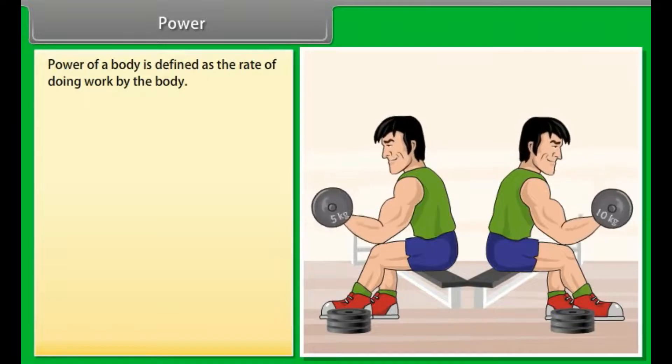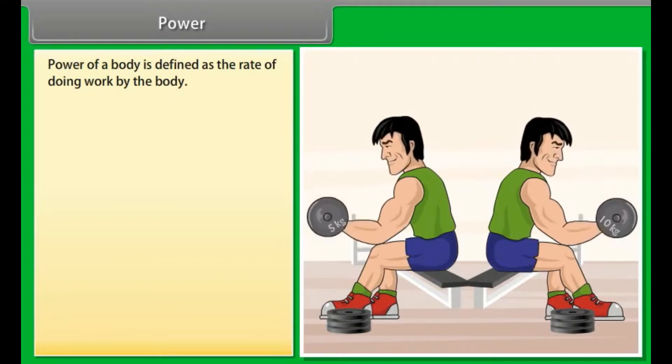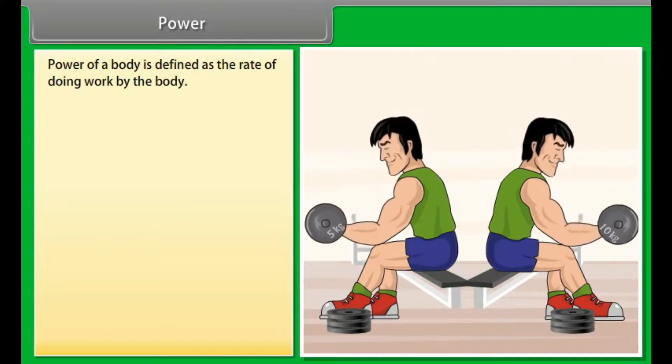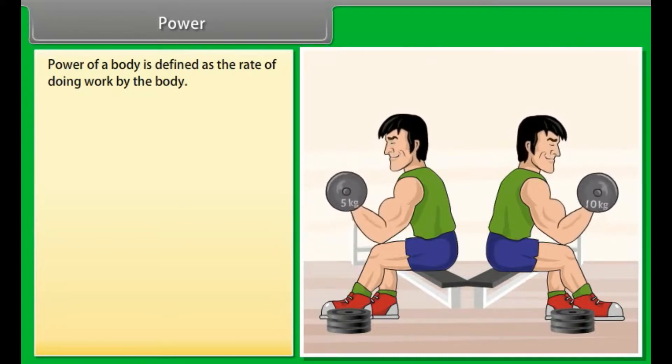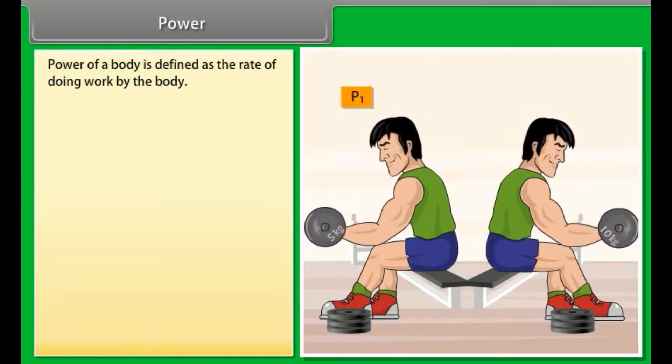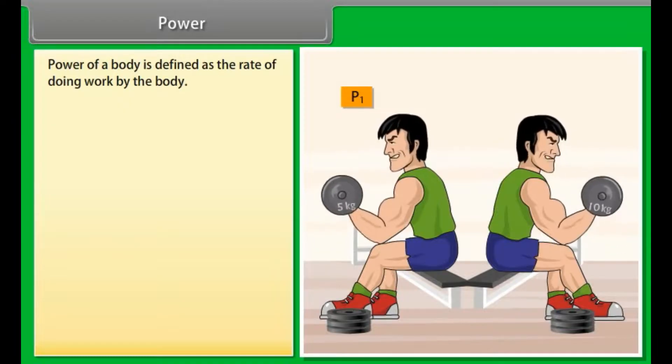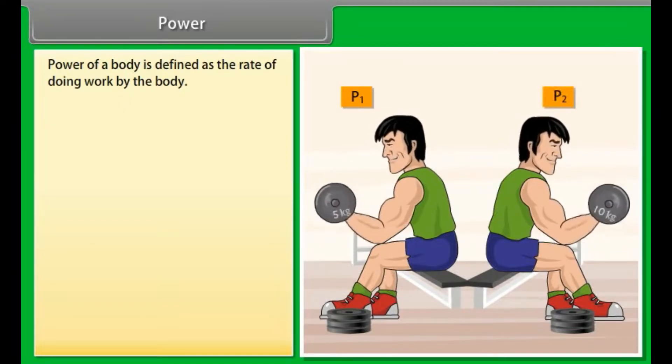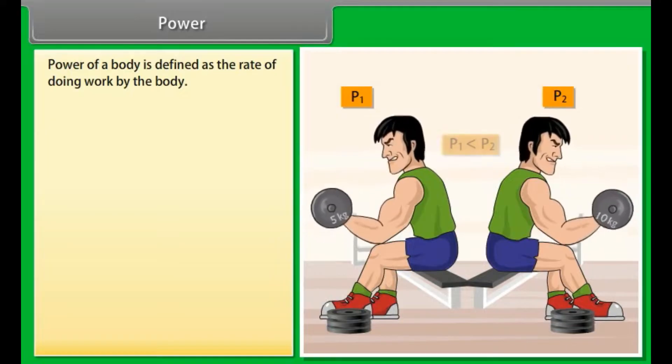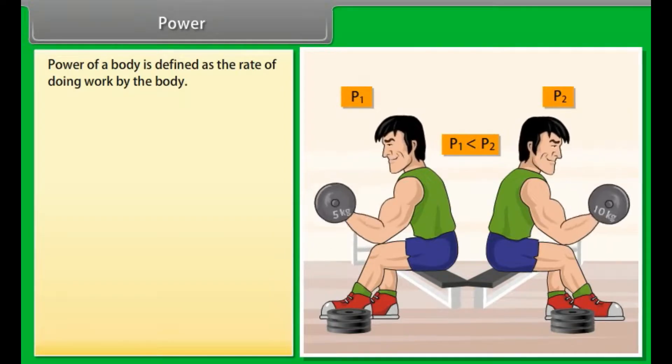Power. Power of a body is defined as the rate of doing work by the body. Let us take an example. A boy doing exercise by using dumbbell. When he used the dumbbell of 5 kilogram, then he applied power P1. And when he used the dumbbell of 10 kilogram, then he applied power P2. Hence the power rating is high when he used the dumbbell of 10 kilogram as compared to the dumbbell of 5 kilogram.